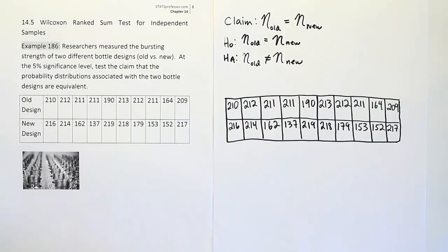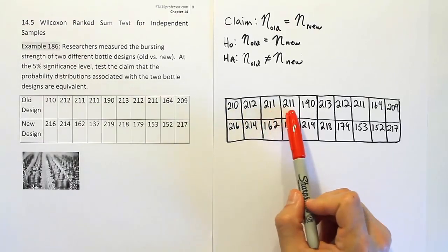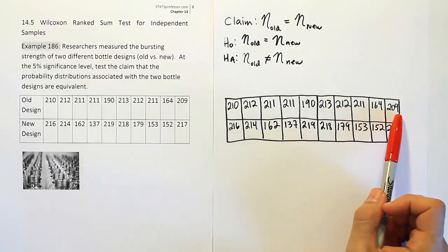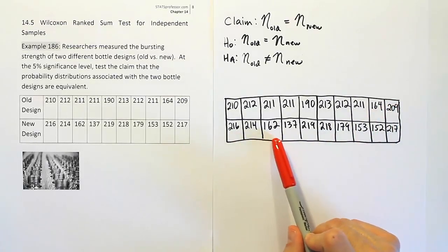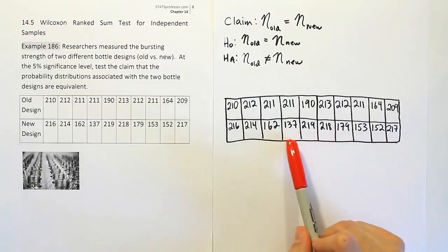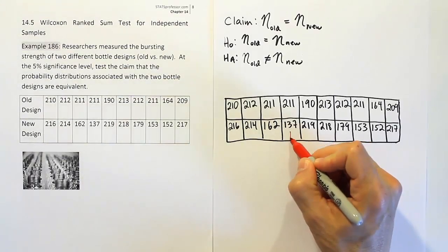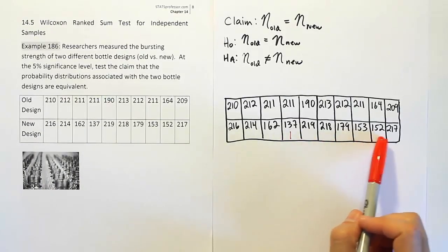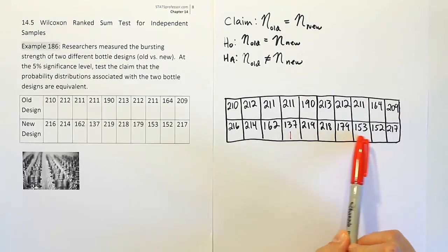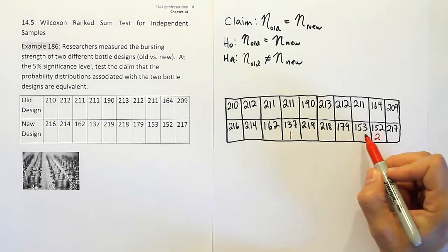Step three is designated for working with the data, and in this case we're finding the ranks. Finding the ranks for a long list of numbers is difficult — you have to be very careful. We rank them making the smallest number rank 1, then the next smallest rank 2, and so on. Scanning the list, most numbers are in the 200s, so numbers in the 100s will be small. The lowest number is 137, which gets rank 1. Next are 152 and 153, which get ranks 2 and 3.